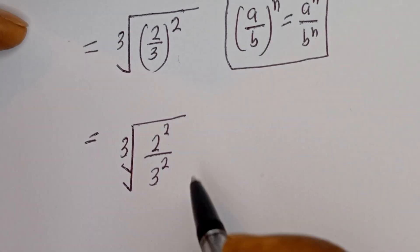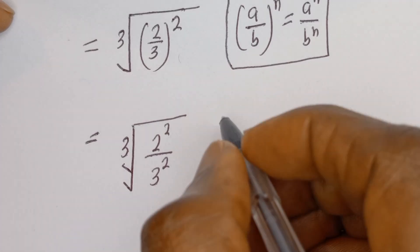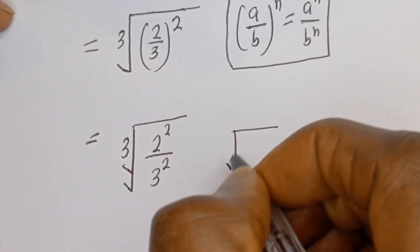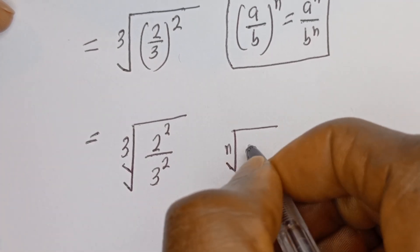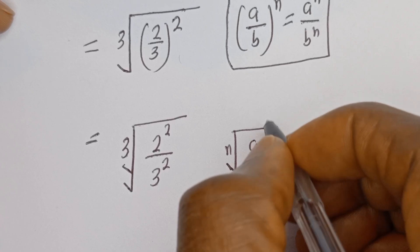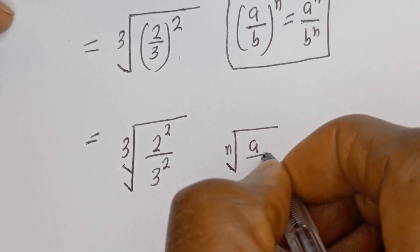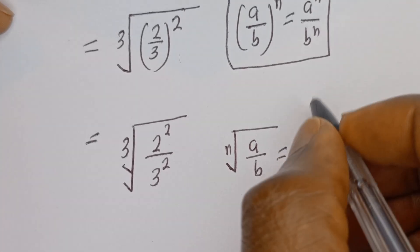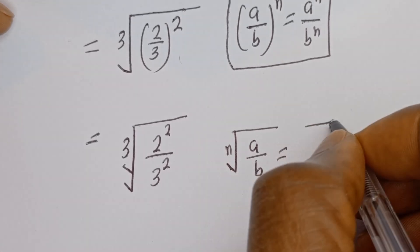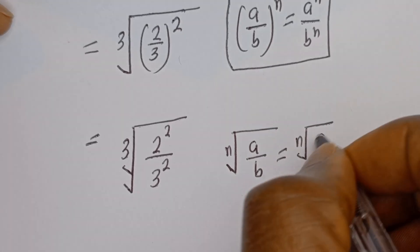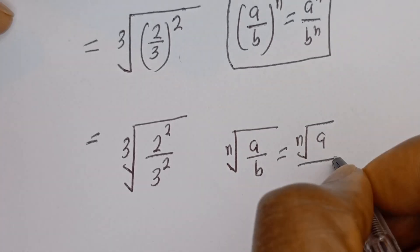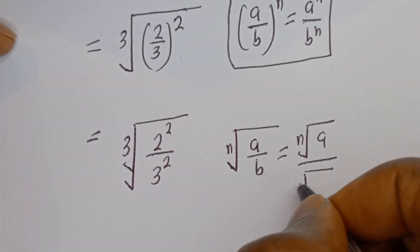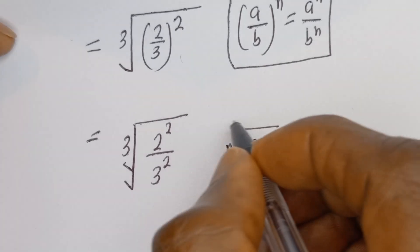Also, take note of this: if you have the nth root of a divided by b, this is equal to the nth root of a, divided by the nth root of b.